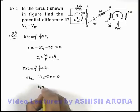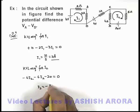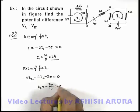And on simplifying, the value of i_2 we are getting is minus of 20 by 10, that is minus 2 ampere.